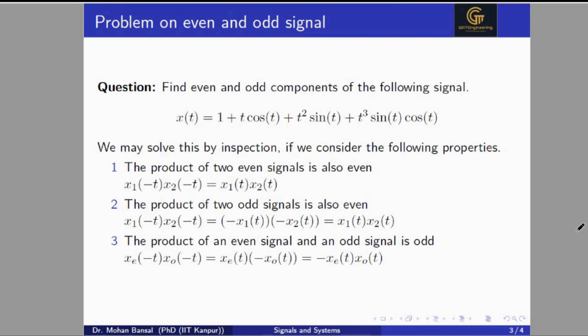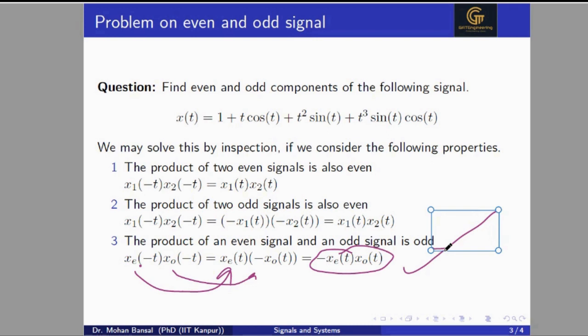The product of an even signal and an odd signal is always odd. Just like multiplying two positive numbers gives a positive, two negative numbers gives a positive, and one positive and one negative gives a negative — if we equate negative with odd and positive with even, the same rule applies. So: even × even = even, odd × odd = even, even × odd = odd.